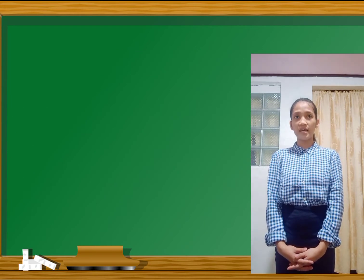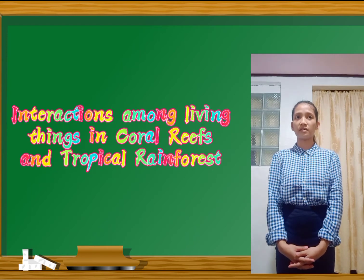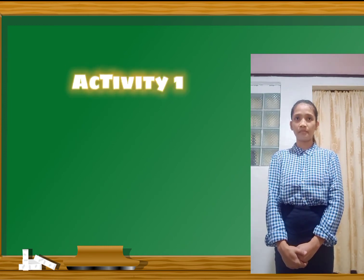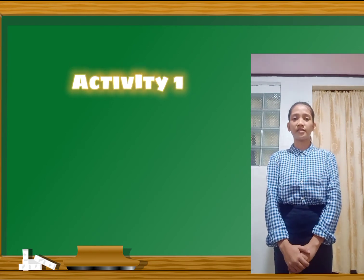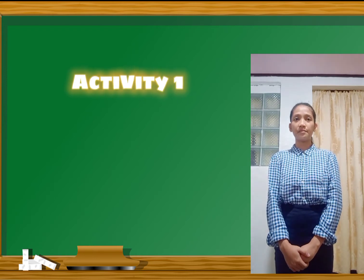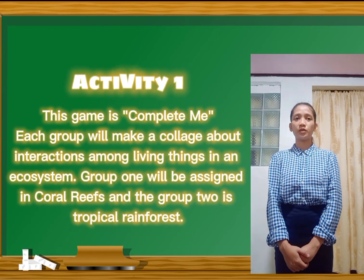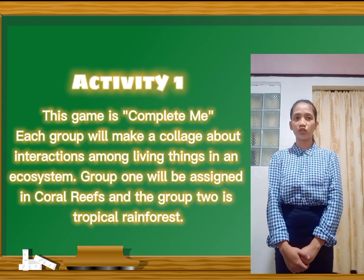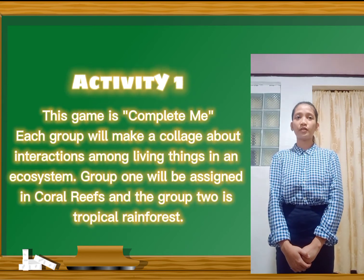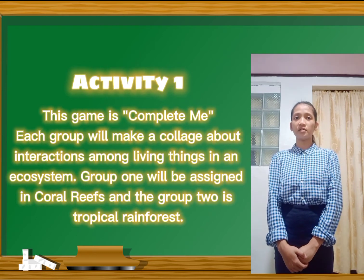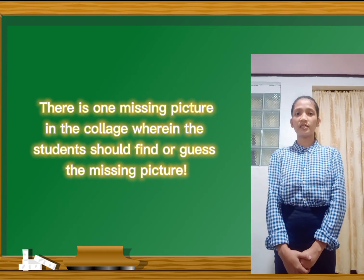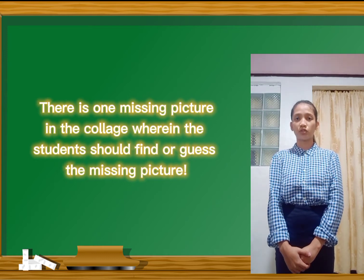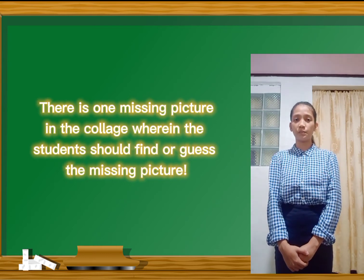Our topic for today is about interactions among living things in coral reefs and tropical rainforests. Before we discuss our new topic, we'll have first a game. Who would like to play some games? All are interested to play. This game is named Complete Me. I will group you into two and you will make a collage about the interactions among living things in an ecosystem. I will give you the pictures, but there is one picture that you need to add — you will guess what picture is missing. That is why the game is named Complete Me.